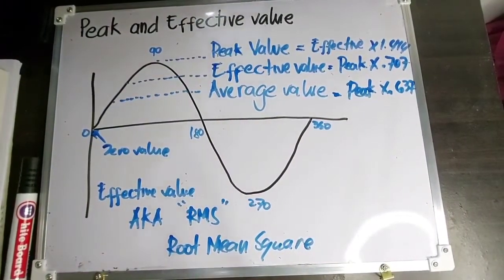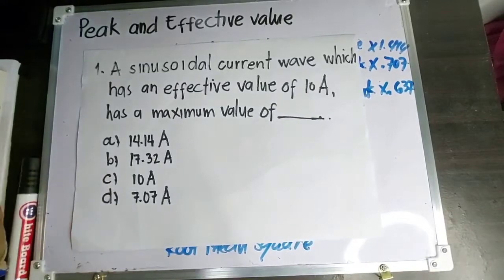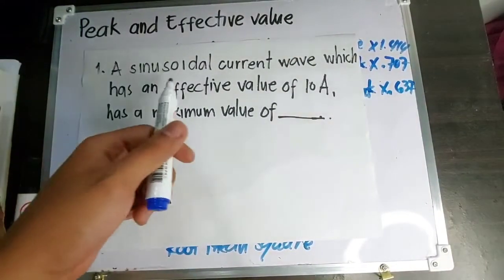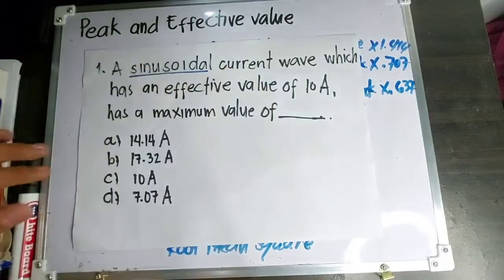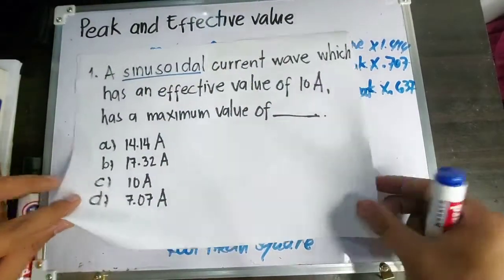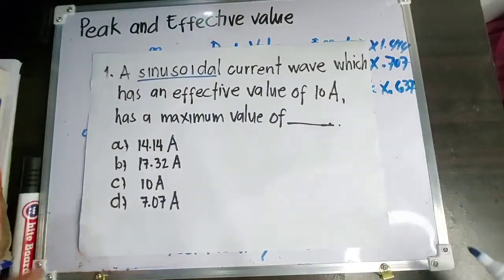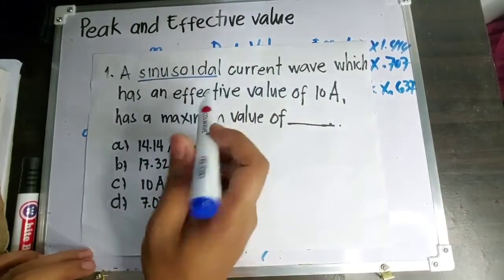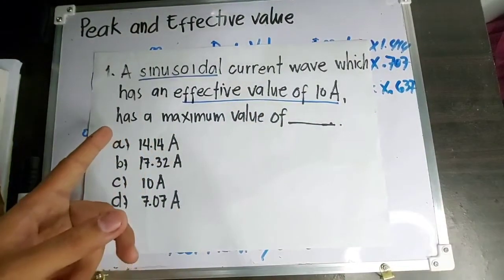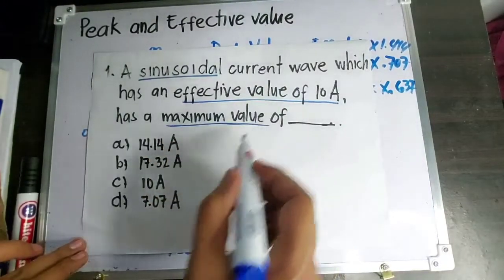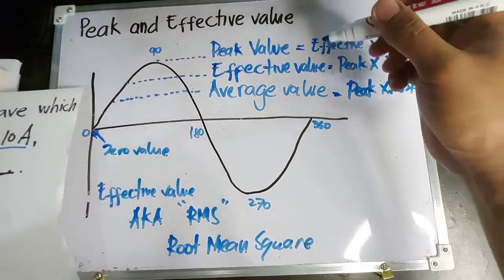Balikan natin yung problem. A sinusoidal current wave — sinusoidal, ito ay sa AC, alternating current — which has an effective value of 10 ampere. Ano yung kanyang maximum value? Ang tinatanong is maximum value. Maximum value, that is also peak value — ito rin yung maximum value.